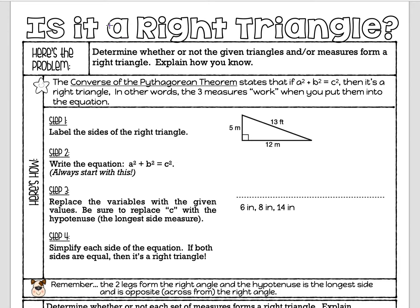This lesson is called: is it a right triangle? We need to determine whether or not the given triangles or measures form a right triangle, and explain how we know. The converse of the Pythagorean theorem states that if a² + b² = c², then it's a right triangle. If the values work in that formula, it is a right triangle. If they don't, it's not.